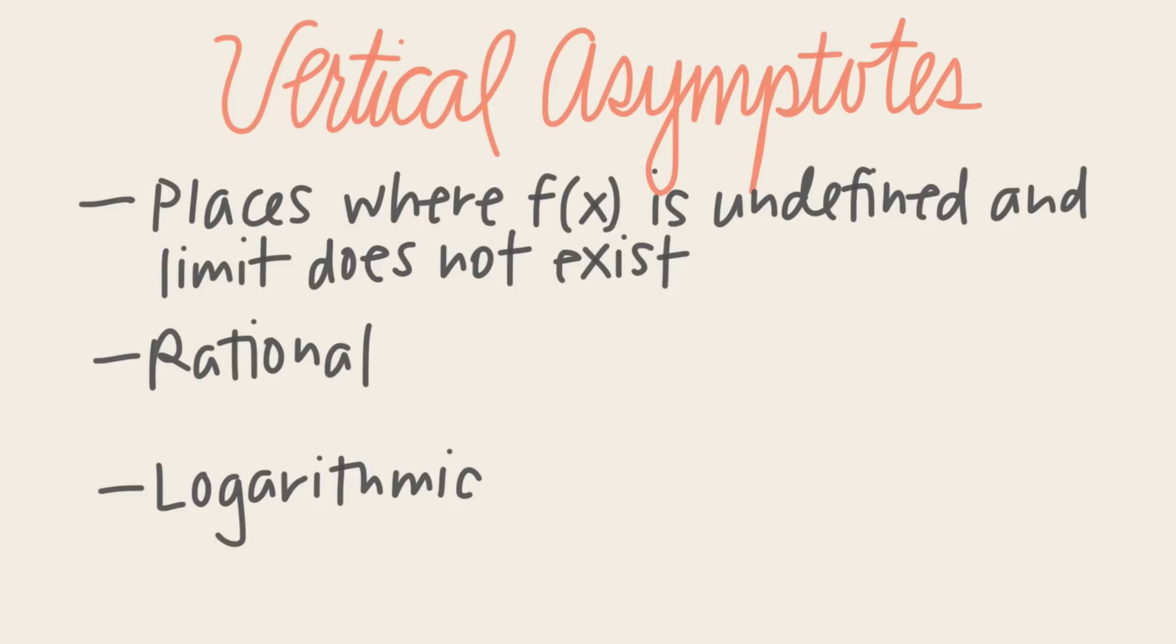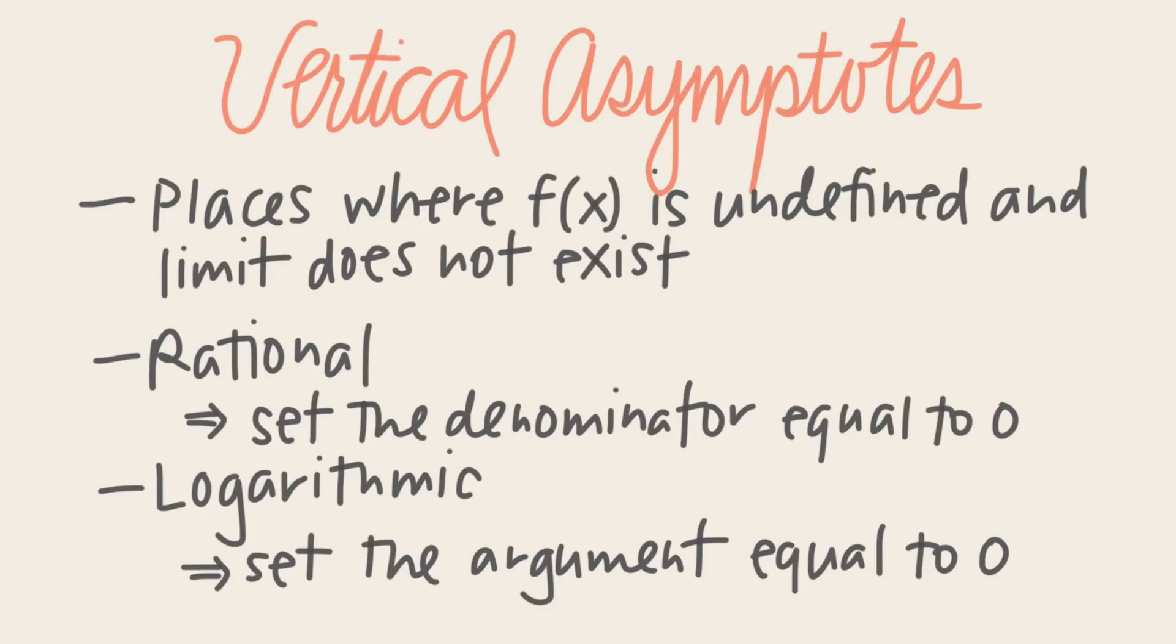In rational functions, we set the denominator of the function equal to 0, and solve for the variable, and in logarithmic functions, we see where the argument of the function would be equal to 0, and know that the vertical asymptote would be along that line.